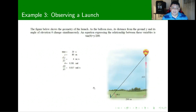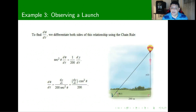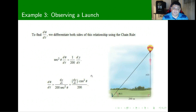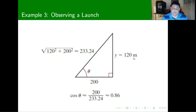At this point, if we have information about the angle of elevation at any given time — for example, if theta is 0.381 at 20 seconds — we can find the rate of change dθ/dt if we also know dy/dt. We can obtain the height by using the triangle: since tangent of theta equals y over 200, with theta equal to 0.381 we find that y equals 120.